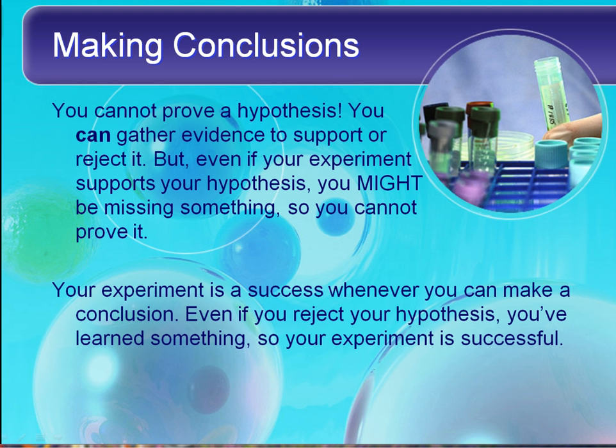You must include accurate and precise measurements. When you're making conclusions, you cannot prove a hypothesis. You can gather evidence to support or reject it. But even if your experiment supports your hypothesis, you could have made an error somewhere or be misinterpreting results. So you cannot prove it. Over time, though, you can get enough evidence to come up with a theory. Your experiment is a success whenever you can make a conclusion — it doesn't matter if you reject your hypothesis. You've still learned something. Your prediction may be wrong, but that doesn't mean your experiment failed in any way.